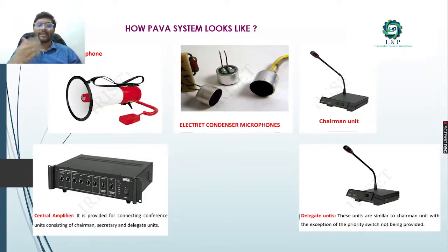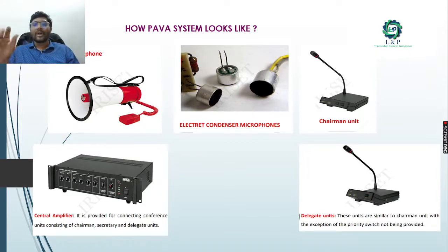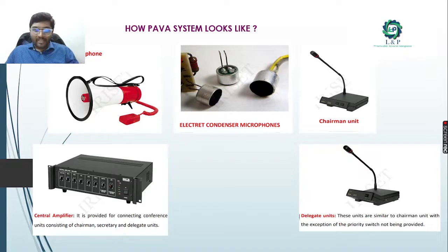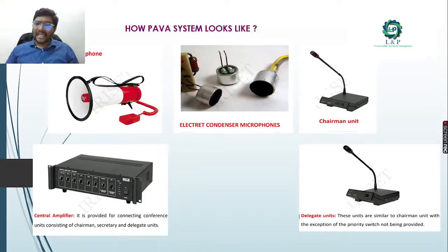We also have power megaphones, condenser microphones, and a chairman unit used in the main control room. The chairman unit has a switch provision - when pressed and talked into, it is given the highest priority. Even if music is playing through the speakers, pressing the chairman unit overrides everything. The local unit does not have this priority switch. Apart from the normal amplifier, we have central amplifiers where the main amplifier acts as master and the central amplifiers act as slaves.